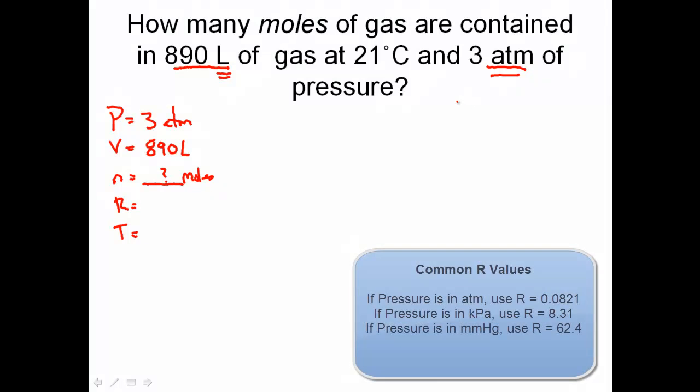Anytime you have an ideal gas constant, I'm going to give you three ideal gas constants. They're going to be 8.31 if you see kilopascals, 0.0821 if you see atm as a pressure, and 62.4 for mmHg. In this problem, we see the unit as atmosphere, so we're going to use 0.0821.